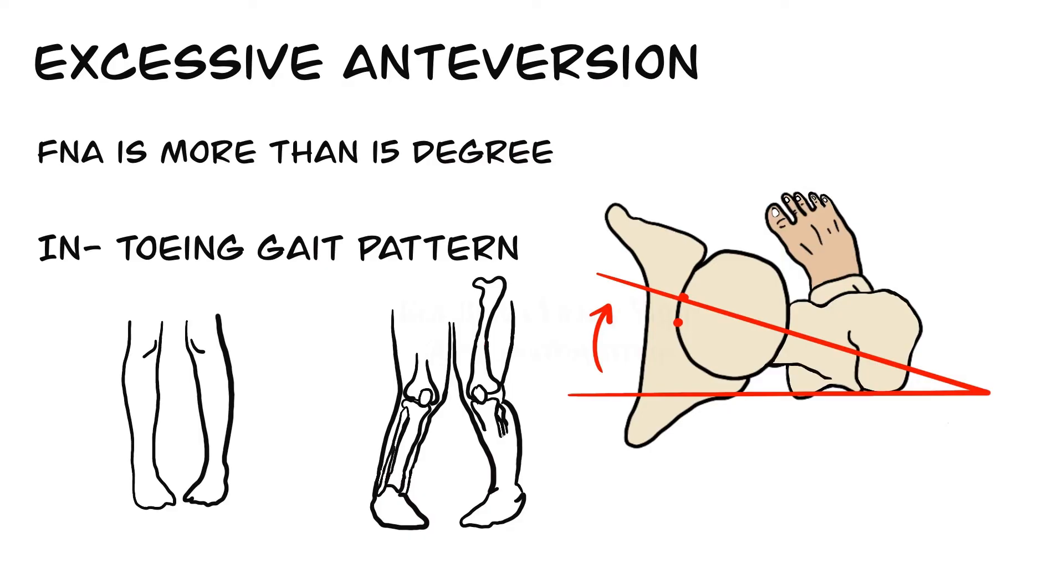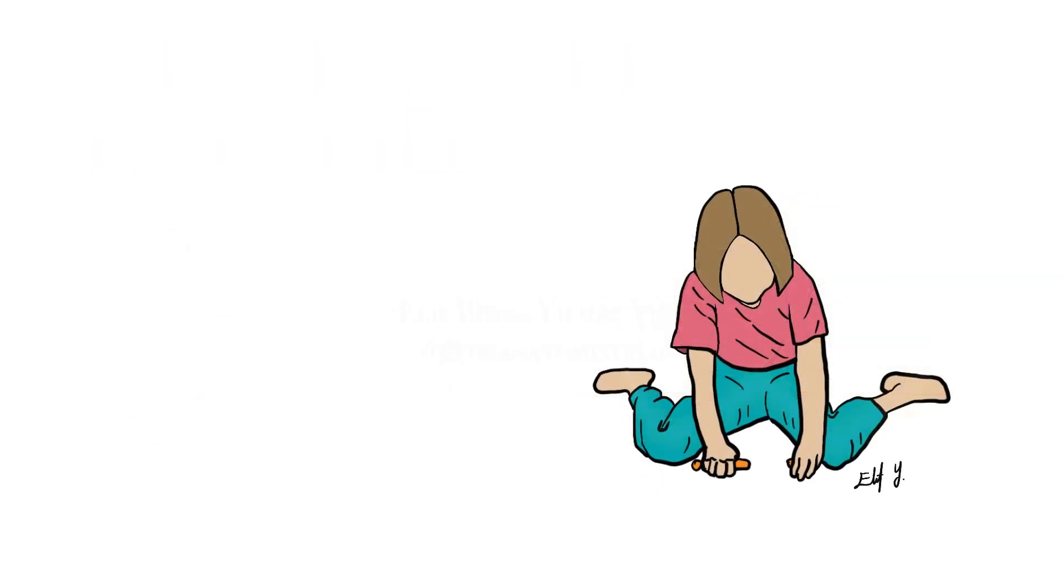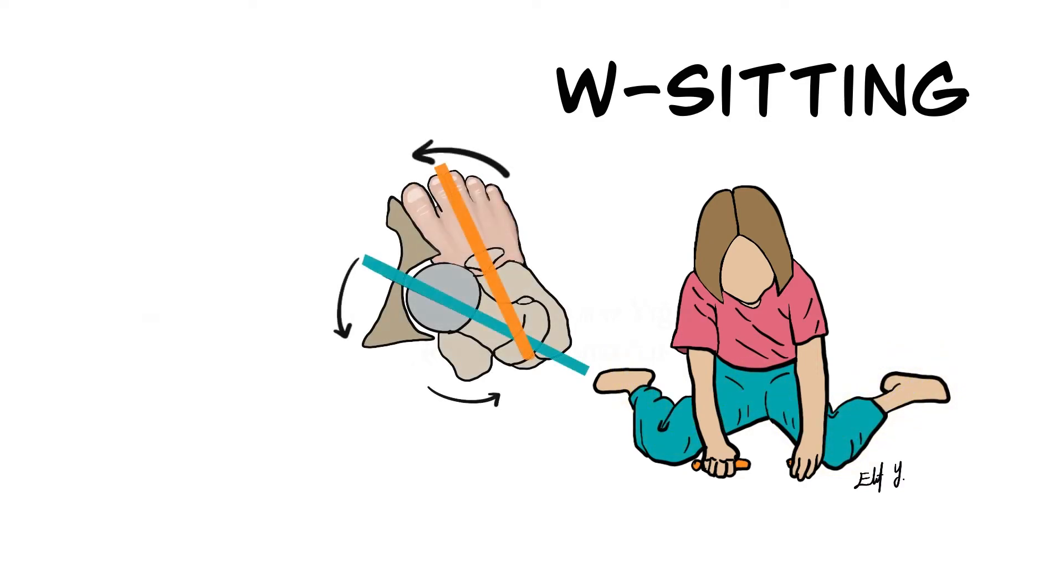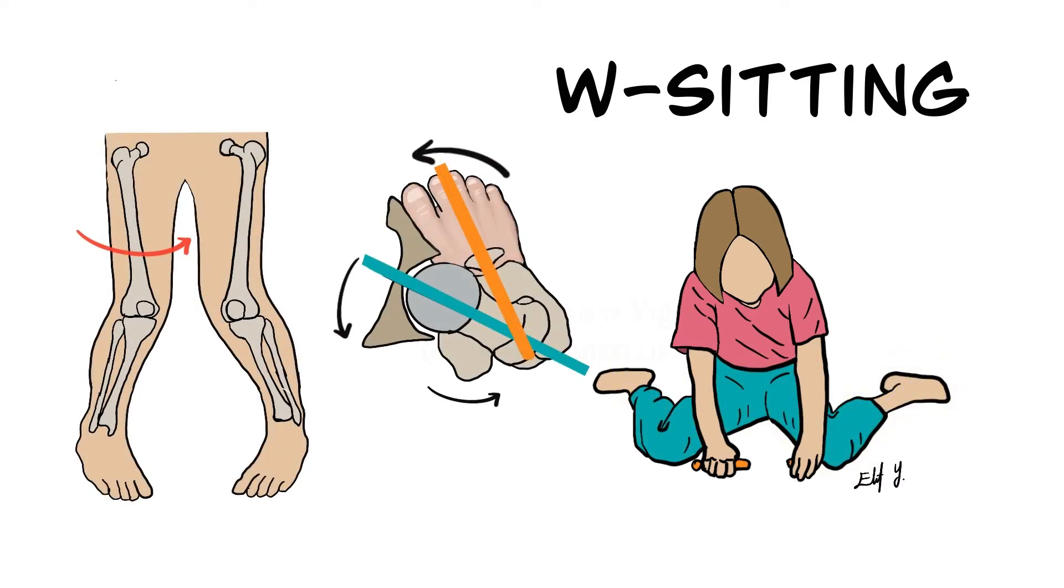Children with increased anteversion run with the circumduction gait secondary to internal rotation at the hip. That is why generally children prefer W-sitting rather than cross-legged. Excessive anteversion of the femoral head is compensated by internal rotation of the femoral shaft. This is seen with the introversion of the lower extremity while walking. This position does not cause or worsen in-toeing in children.